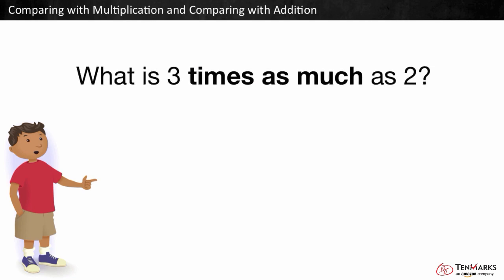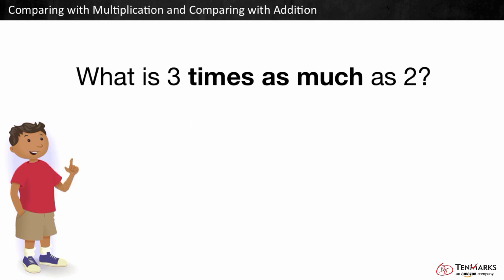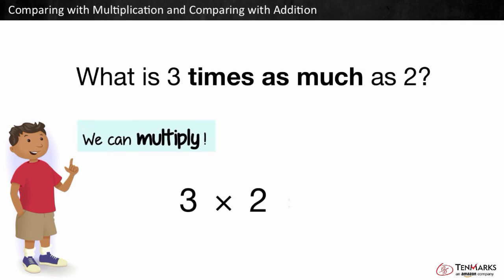What is three times as much as two? Three times as much is like tripling an amount. If something is three times as much, we can multiply. Three times two is equal to six.